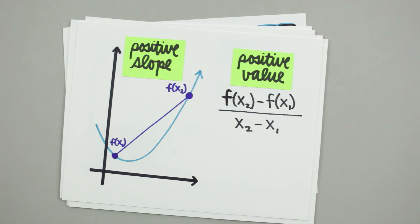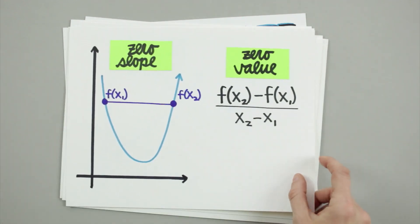In the same way, if f(x₁) and f(x₂) are equal to each other, the secant line will be horizontal and the numerator of the formula will be zero, so the average rate of change will also be zero.